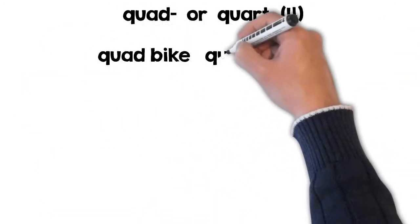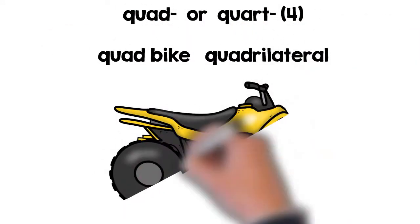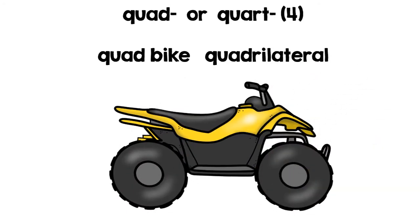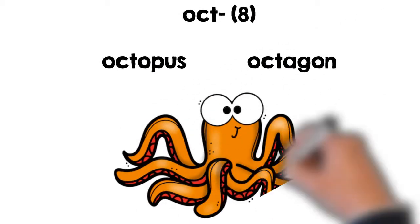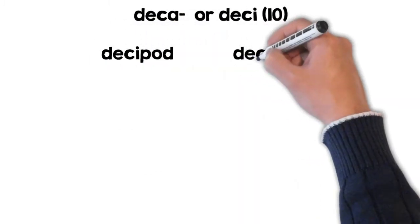Quad or quart mean four: quad bike, quadrilateral. Oct means eight: octopus, octagon. Deca or deci mean ten: decipod, decathlon, decade, decimal.